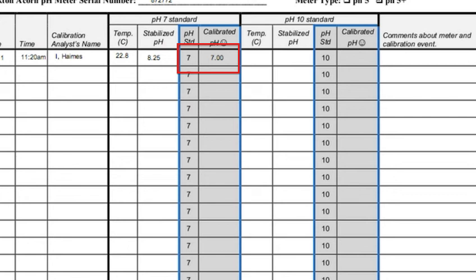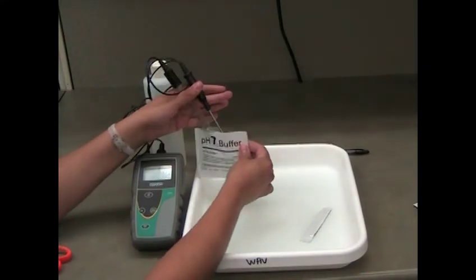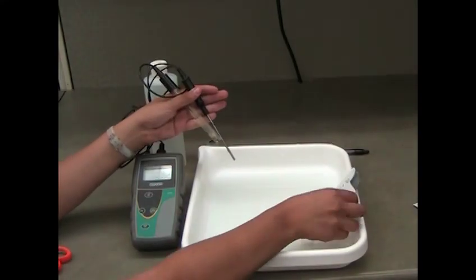The value differs by more than 0.2, recalibrate the meter, and record the new calibration result on a different line of the datasheet. Repeat this process for the pH 10 buffer solution.